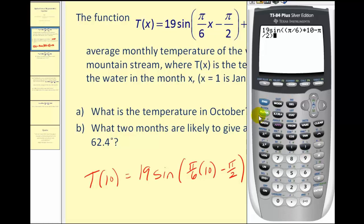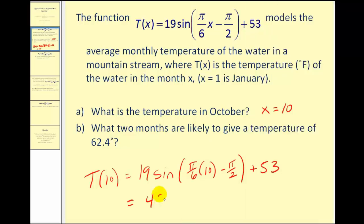And it was plus fifty-three. So it looks like in October the water temperature is approximately 43.5 degrees Fahrenheit. That's a pretty straightforward question.